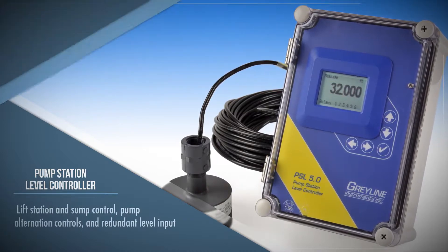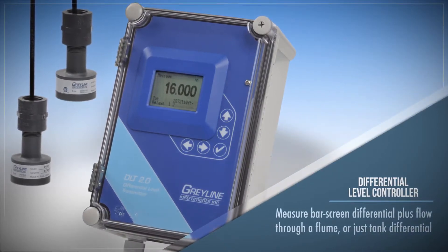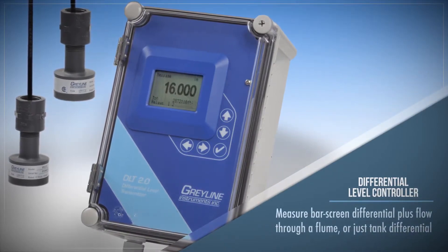The differential level controller is used to measure bar screen differential plus flow through a flume or just tank differential.